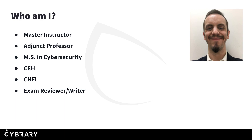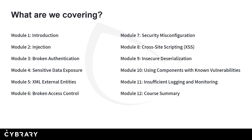Of course I cannot give you the answers for that exam, so please don't ask. So what are we covering in this course? Module 1 and module 12 are just going to be the introduction and course summary — very high-level overview. Modules 2 through 11 cover the OWASP Top 10 from 2017: injection, broken authentication, sensitive data exposure, XML external entities (XXE), broken access control, security misconfigurations, cross-site scripting, insecure deserialization, using components with known vulnerabilities, and insufficient logging and monitoring.